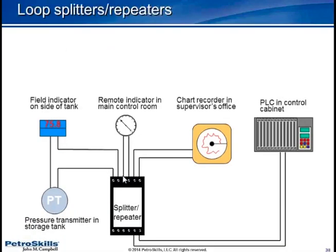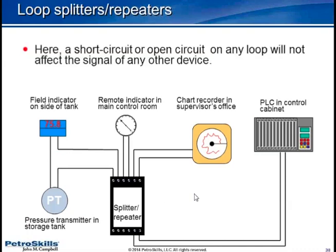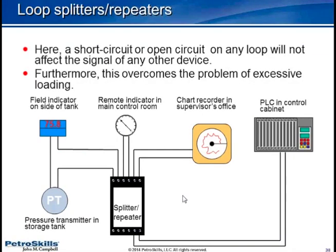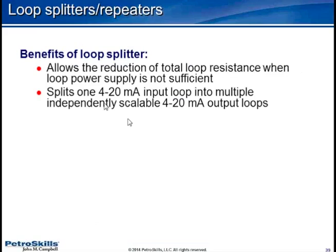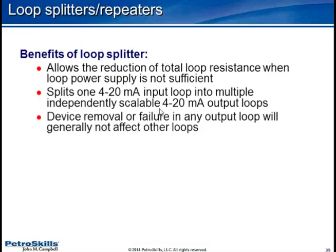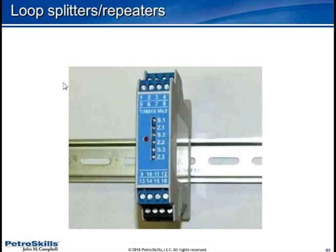The solution lies with what we call a splitter repeater. Basically, if I get a break here, I'm going to get a failure. But if I disconnect that, does it matter? No. It also overcomes the problem of excessive loading. If I have a load that exceeds the load limitations of your transmitter, by using a splitter repeater, I can overcome the problem. Benefits: it allows load reduction when loop power is not sufficient. It splits one 4 to 20 milliamp input loop into multiple independently scalable outputs. If I remove a device, it won't affect the other loops.